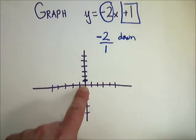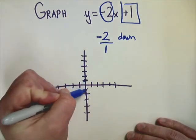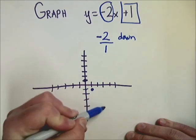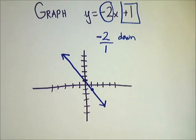The key here is to make sure you start at the point that you drew here as your intercept. Don't go back down to the origin or something weird. Start right there. Go down 2, over 1, and then you've got your nice little line that you can connect. y equals negative 2x plus 1.